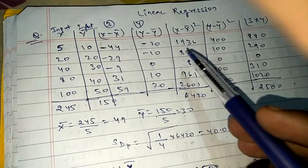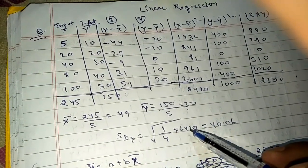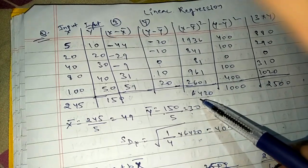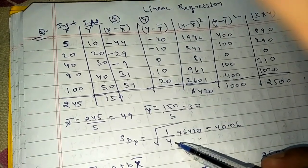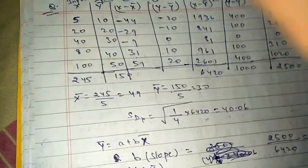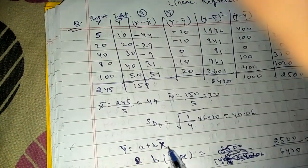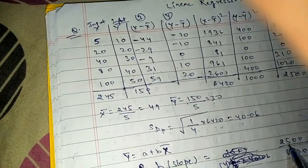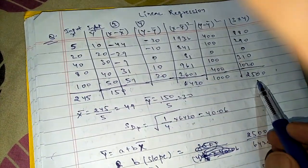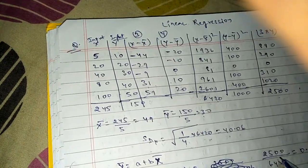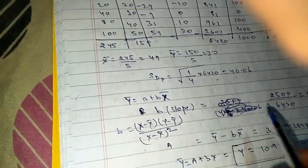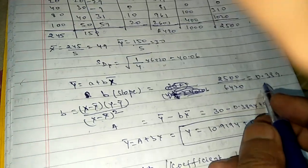The standard deviation for x is calculated by taking the summation of (x minus x̄) squared, which is 6420, dividing by n minus 1 = 4, and taking the square root, giving 40.4. The slope b is given by summation of (x minus x̄)(y minus ȳ) divided by summation of (x minus x̄) squared, which is 2500 divided by 6420 = 0.389.